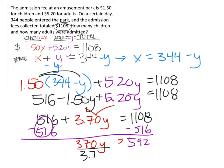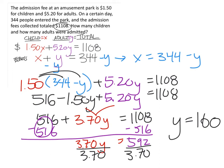We subtract 516 from both sides, giving us 3.70y equals 592. To solve for y, we divide both sides by 3.70, which gives us y equals 160. Looking back, y is the number of adult tickets, so there were 160 adult tickets — one of our answers.